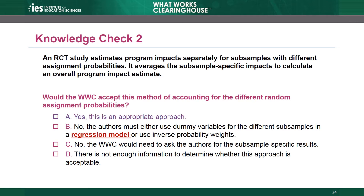The answer is A. This is an appropriate approach. The study used different assignment probabilities and needs to account for them in the analysis. According to the WWC, estimating separate impacts and averaging them is one of three acceptable ways to account for different assignment probabilities. Choice B is incorrect because it includes only two of those acceptable approaches. Choice C is incorrect because the WWC does not need the separate subsample impacts. Choice D is incorrect because the description of the approach is sufficient.